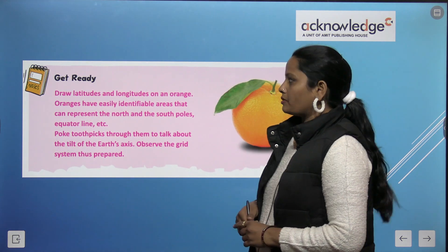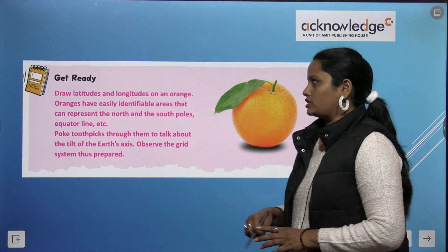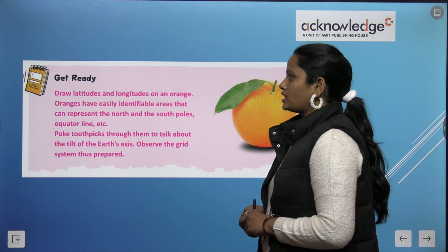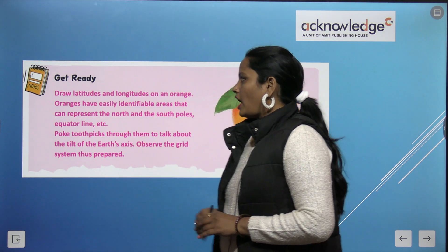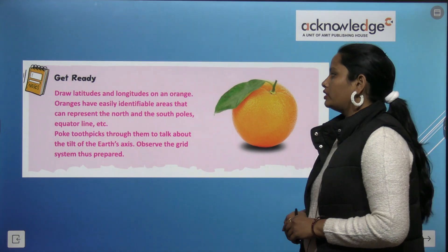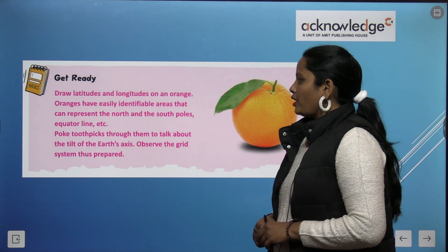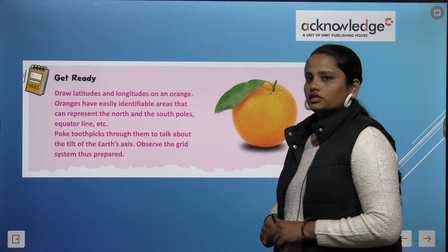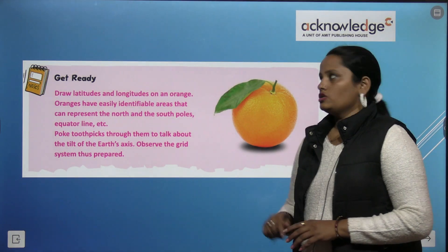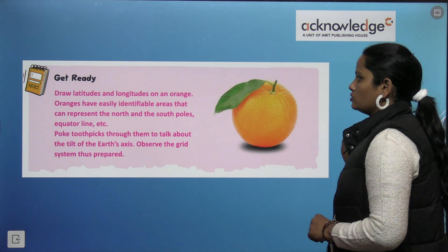Before starting, let's do some exercise given here. You have to draw latitudes and longitudes on an orange. Here you can see there is a picture of an orange and you have to draw the longitudes and the latitudes on it. Oranges have easily identifiable areas that can represent the north and south pole and equator lines. Poke toothpicks through them to talk about the tilt of the earth's axis and observe the grid system. You have to do this exercise on your own.